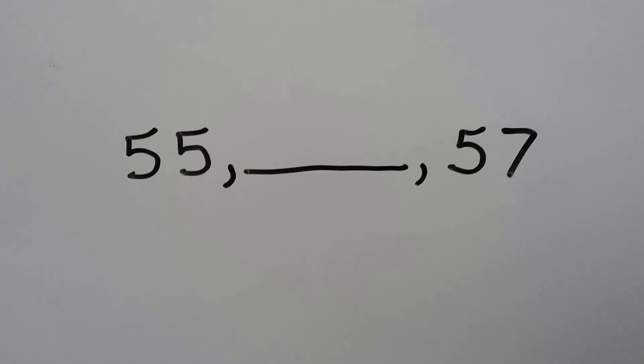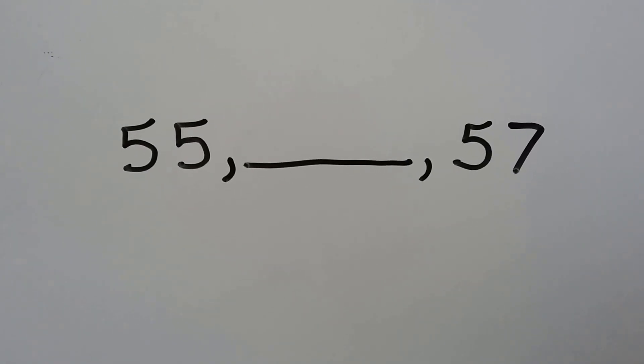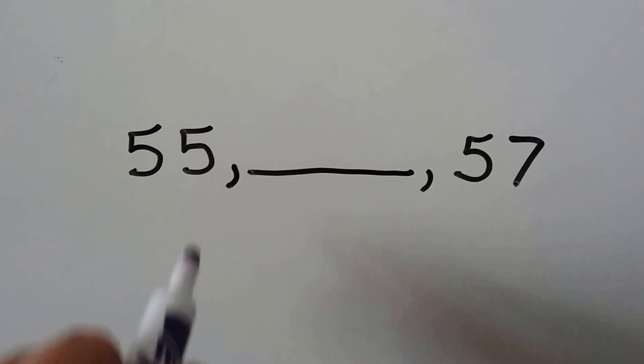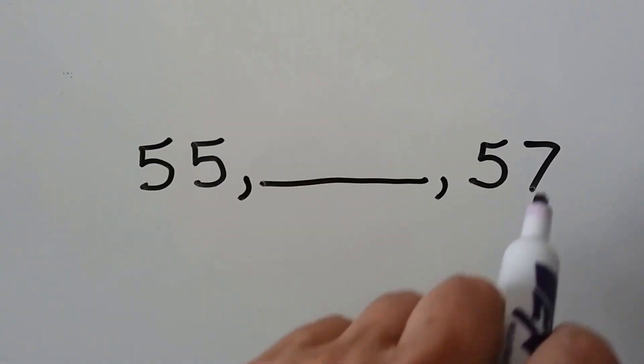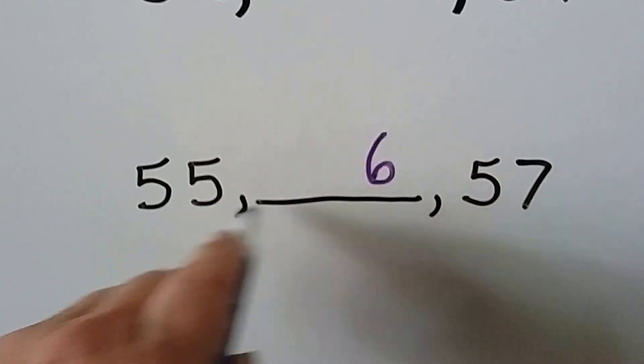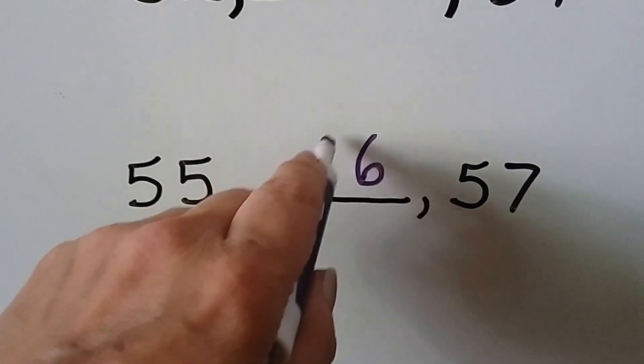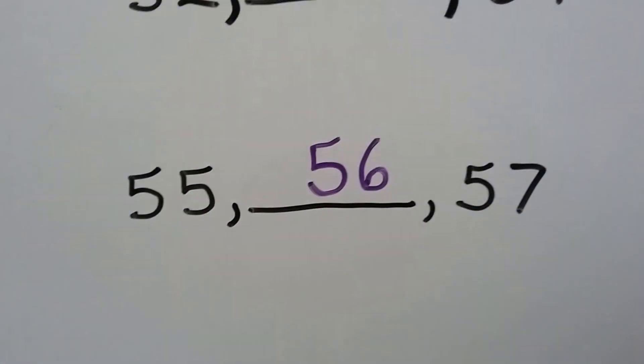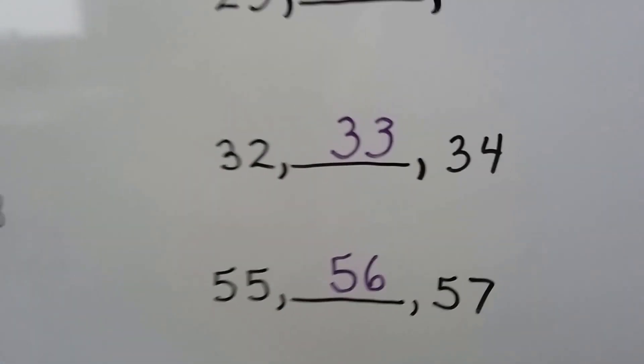What number comes between 55 and 57? What number comes between a five and a seven? A six, and they all have five tens, so it's going to be 56. Let's try some problem solving.